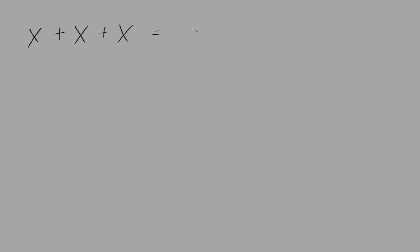We'll start by adding and subtracting and then multiplying and dividing some terms that have variables and exponents. x plus x plus x is equal to 3x, or 3 times x. The x is called a variable, and when you have a number in front of the variable it is called a coefficient.